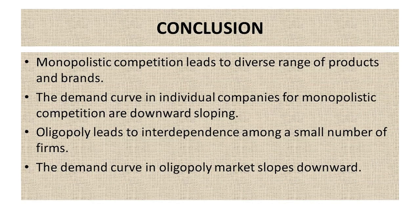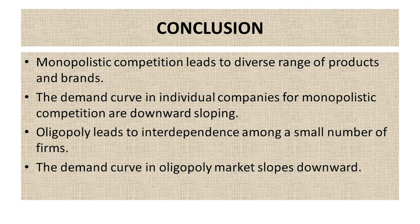To conclude: monopolistic competition leads to a diverse range of products and brands. The demand curves for individual companies in monopolistic competition are downward sloping. Oligopoly leads to interdependence among a small number of firms, and the demand curve in oligopoly markets also slopes downward. Thank you all for your attention.